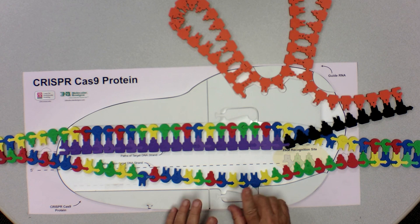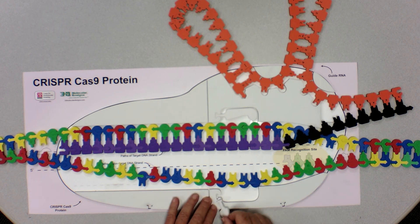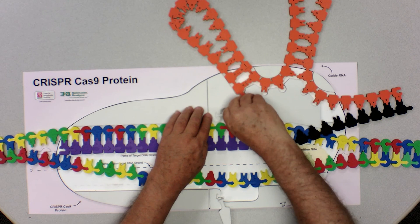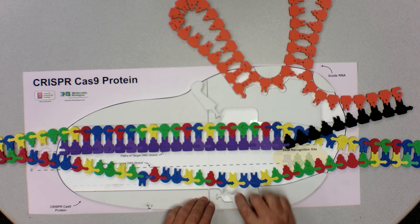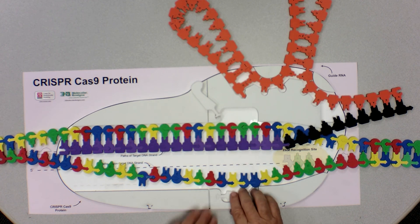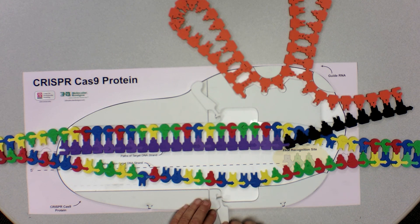So we've done two things to the Cas9. Number one, we've inactivated both of these nucleases. That is all you need to know for the first few Science Olympiad protein modeling tournaments. Ultimately, you'll learn that they only inactivated one of them — but to begin with, in the first generation base editor, they inactivated both. So the Cas9 can bind, but it can't cut. But we want to modify that C to a U.